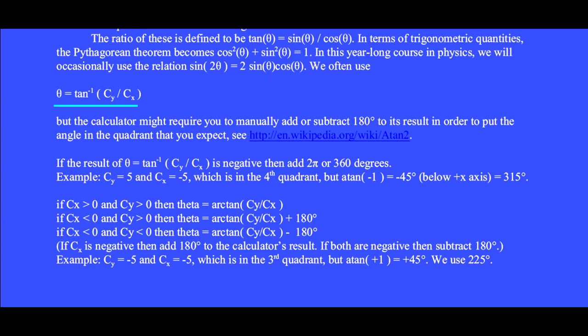We often use θ = arctan(c_y/c_x), but the calculator might require you to manually add or subtract 180° to its result in order to put the angle in the quadrant that you expect. Here are the rules for adjusting the calculator's result for inverse tangent.